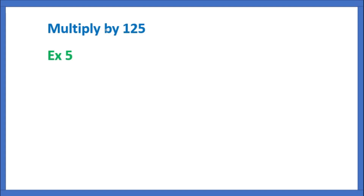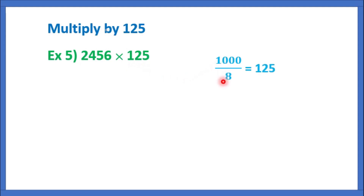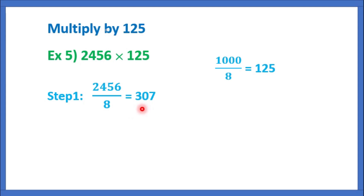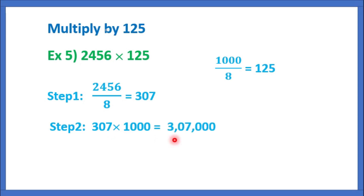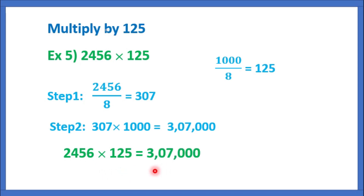Multiply by 125. Example 5: 2456 into 125. 125 we can write it as 1000 by 8. So the first step, we should divide by 8. That is equal to 2456 by 8 is equal to 307. Now, multiply by 1000. That is equal to 307 into 1000 is equal to 3,07,000. That's all. So, 2456 into 125 is equal to 3,07,000.